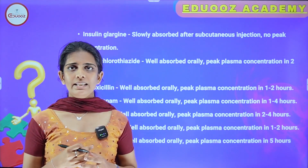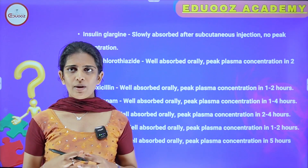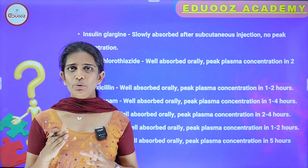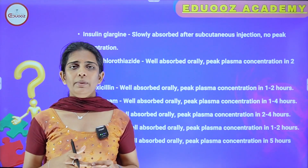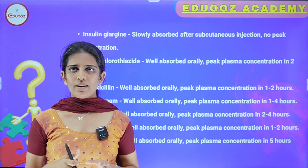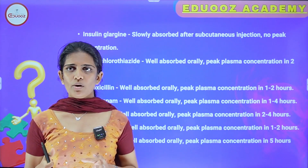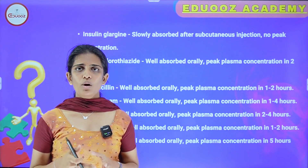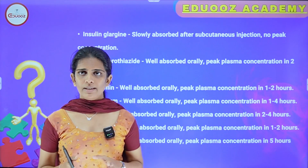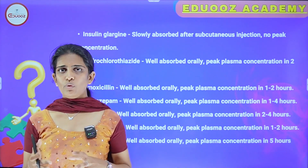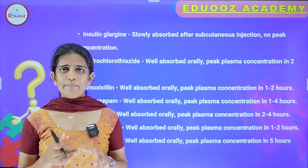Amoxicillin is well absorbed orally with peak plasma concentration in 1 to 2 hours. Clonazepam is well absorbed orally with peak plasma concentration in 1 to 4 hours. Bisoprolol is well absorbed orally with peak plasma concentration in 2 to 4 hours.